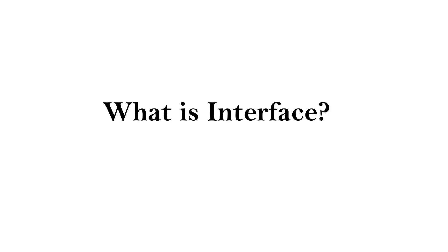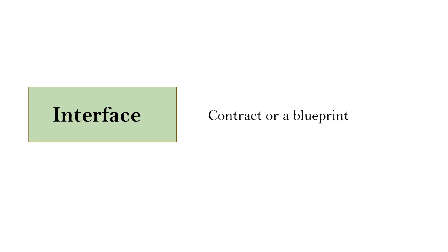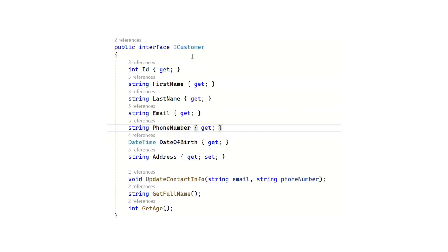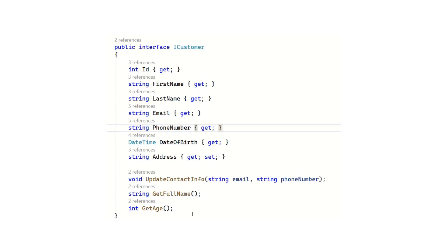Let's start with the definition of interface in object-oriented programming. An interface is just a contract or a blueprint because it defines a set of method signatures without providing the implementation details. Here we can see iCustomer is just a contract or blueprint. It says these are the properties I have, and iCustomer has three methods: updateContactInfo, getFullName, and getAge. Whichever class wants to implement this interface must provide the implementation for them — this serves as a contract for the class that implements it.